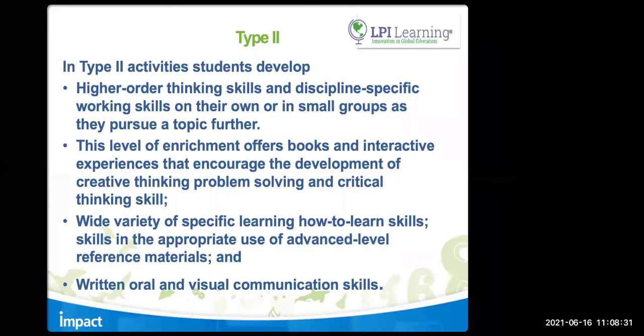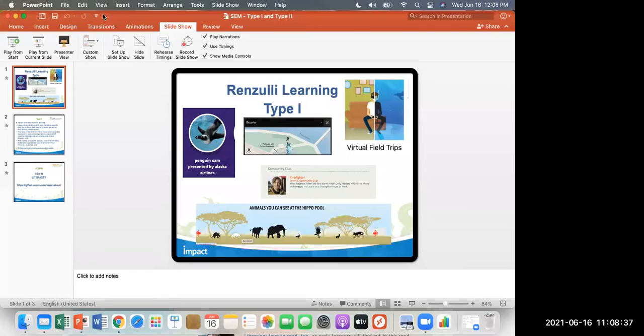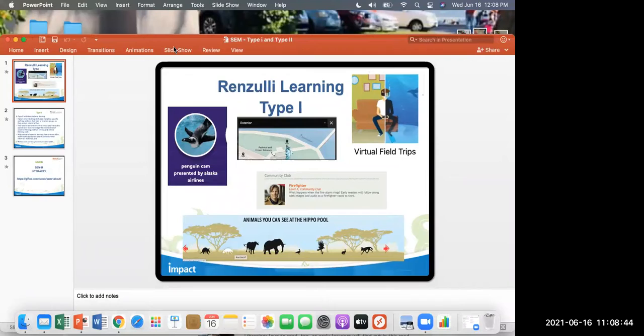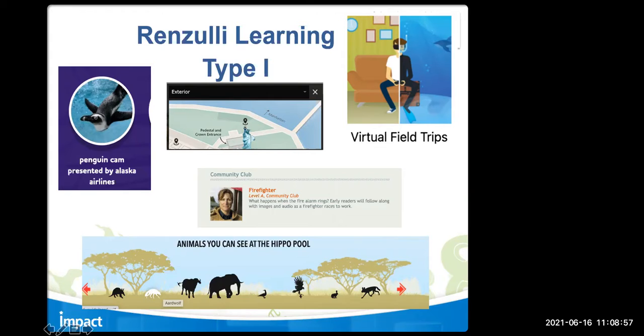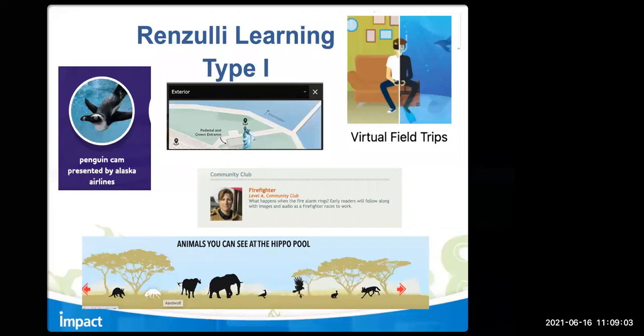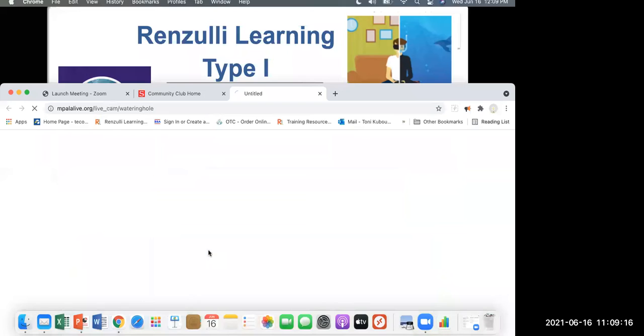Any questions about Type 2? All right, let's look at some of these Type 1s. These are all taken from Renzulli Learning. When we go back into Renzulli Learning, I'll show you where I found these - mostly in virtual field trips. Here are some virtual field trips. Let's say, for example, animals you can see - the hippo at the hippo pool. I'm going to open that up.